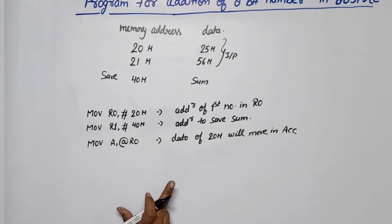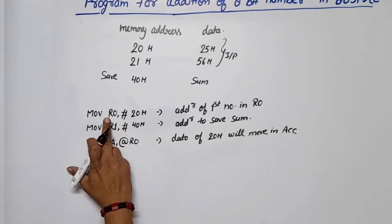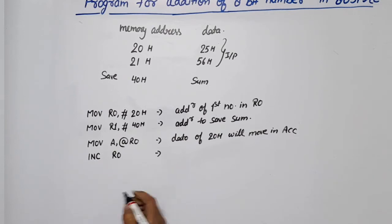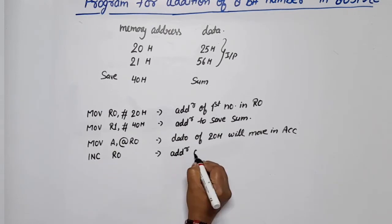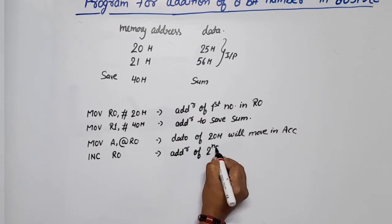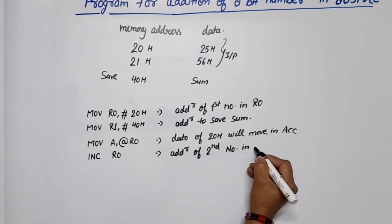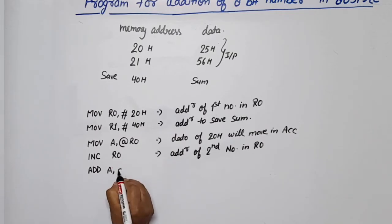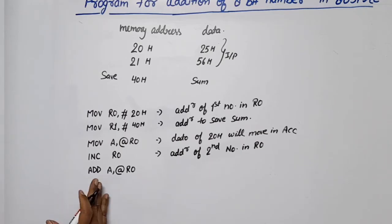Next, we increment R0 to point to the second number: INC R0. Now R0 contains the address of the second number, 21H. To perform the addition, we can either move this to a register or directly add it. We write: ADD A, @R0, which adds the content at the address in R0 to the accumulator.